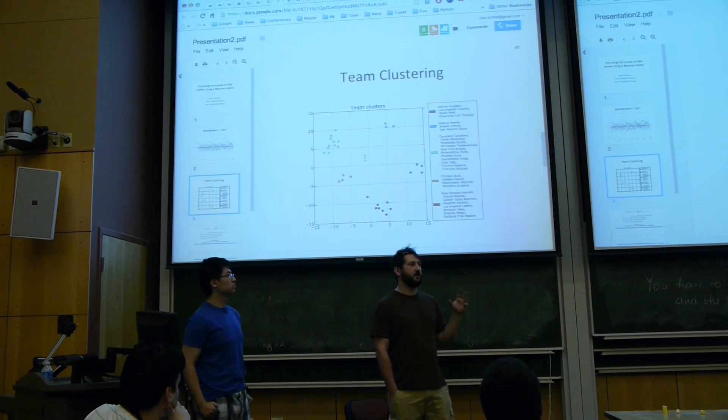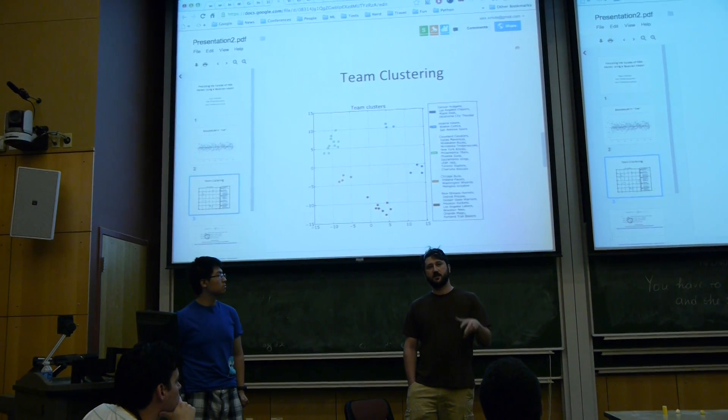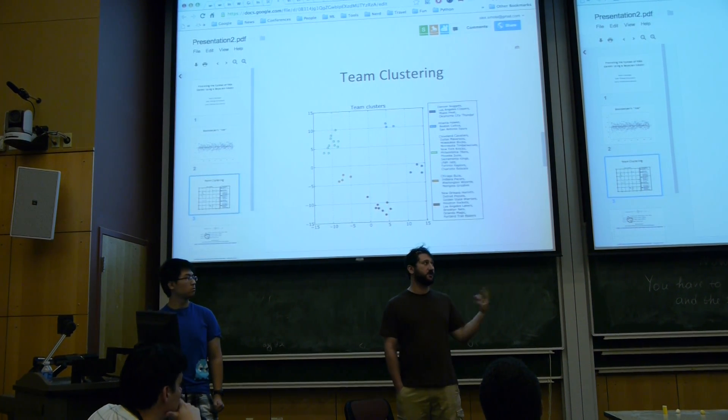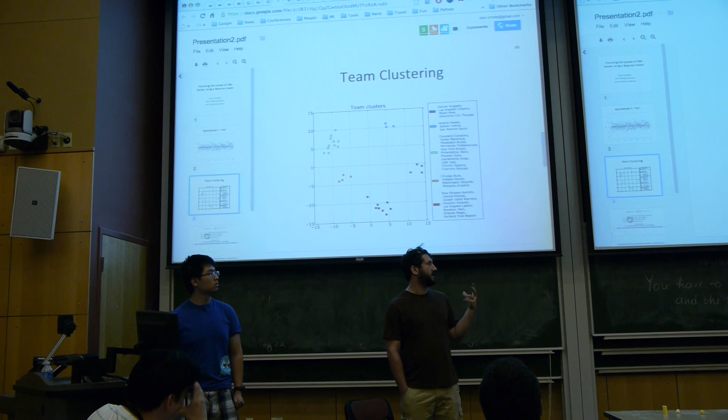Those are basically considered four factors of basketball success, plus two numbers called the offensive and defensive rating, which basically represent points scored and given up per 100 possessions. So those are the 10 features that we used to generate these clusters.